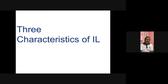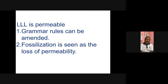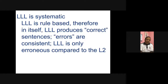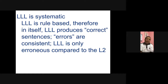There are three characteristics of interlanguage. First, language learner language is permeable — meaning grammar rules can be amended and changed. When grammar rules can no longer be amended, that's when we have fossilization. Fossilization is seen as the loss of permeability or plasticity. Second, language learner language is dynamic — it's always changing, but at a slow pace, through gradual application and extension of rules to more contexts. Third, language learner language is systematic — it is rule-based, and within itself produces correct sentences. It's only erroneous compared to the target language.